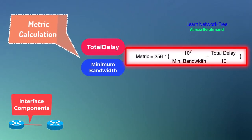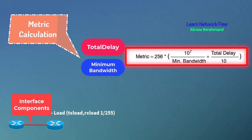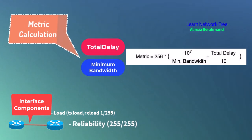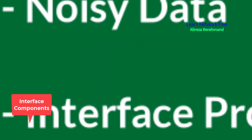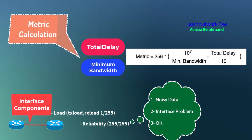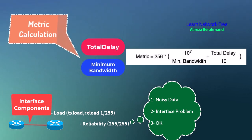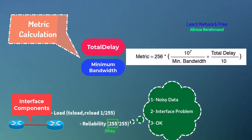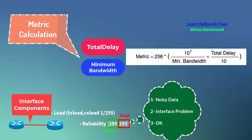Interface components also factor in: load, which is the pressure on the interface — best condition is 1/255; reliability, which has three conditions: noisy data, interface problem, and okay. In the first two conditions data will be dropped, but if everything is okay the number would be 255 out of 255. The last component is MTU, the size of the packet, which is 1500 bytes by default.